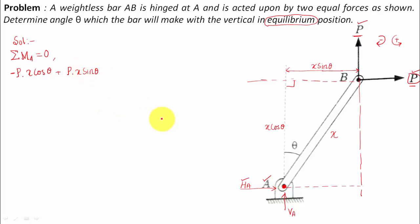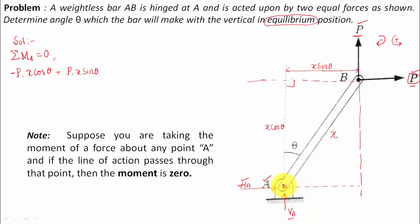The two remaining forces are Ha and Va at the hinge. If you consider the line of action of Ha and try to drop a perpendicular from point A, the perpendicular distance is zero — so Ha times zero equals zero. Similarly, Va acts through point A, and its perpendicular distance is also zero, so Va contributes zero moment as well.